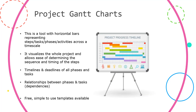I've been managing small and large projects for over 20 years and have also been teaching and coaching others to manage projects. A Gantt Chart is a tool with horizontal bars representing steps, tasks, phases, or activities across a time scale. It visualizes the whole project and allows ease of determining the sequence and timing of the steps, showing timelines of all phases and tasks as well as the relationships between each of these.